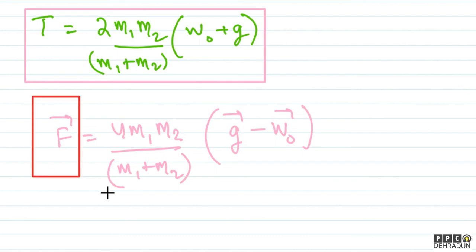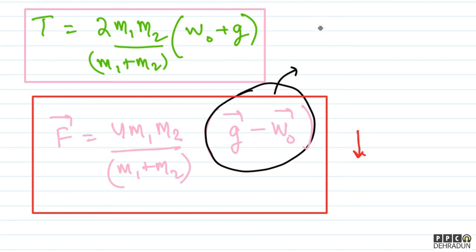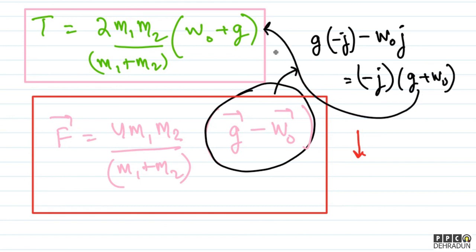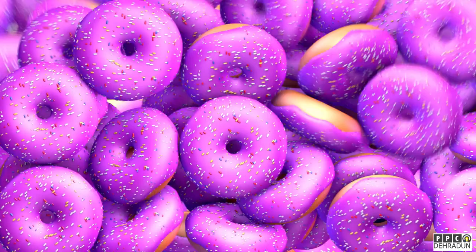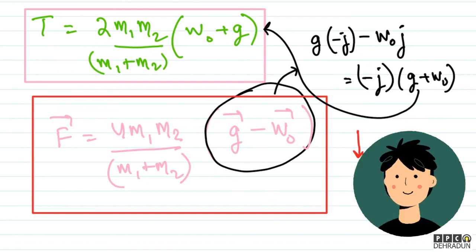This final answer tells us that the force acts in the direction of acceleration due to gravity, i.e., downward. To verify the vector form: g_vector − w0_vector = −g·j_cap − w0·j_cap = −(g + w0)·j_cap, which gives the correct downward direction with magnitude (g + w0). I hope children you got complete clarity on this question. If any doubt remains, feel free to contact me — I will be very happy to help you. Take care, bye-bye.